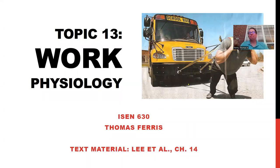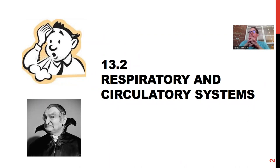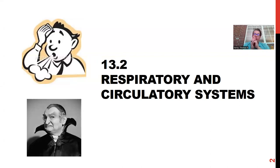Welcome back. Topic 13, today's subtopic is the respiratory and circulatory systems. In 13.1, we talked about how muscles contract and the source of energy for that contraction comes from aerobic or anaerobic metabolism. In the case of aerobic metabolism, that depends on delivering oxygen to the cells in the tissues all the way out to our extremities. Our respiratory system handles gas exchange — oxygen and carbon dioxide — and the circulatory system handles delivery of oxygen to the tissues.